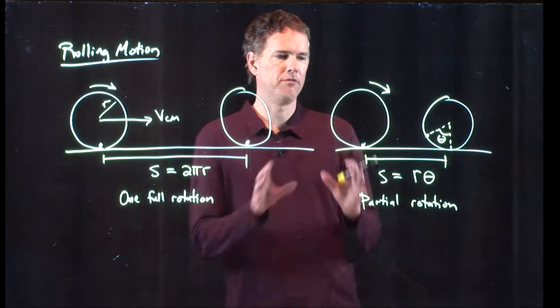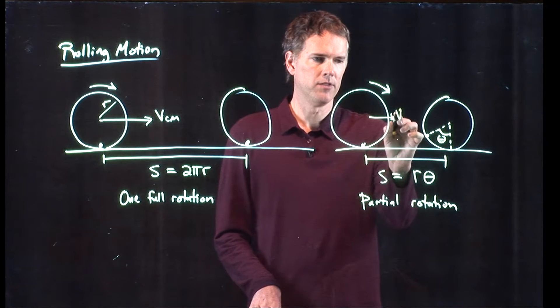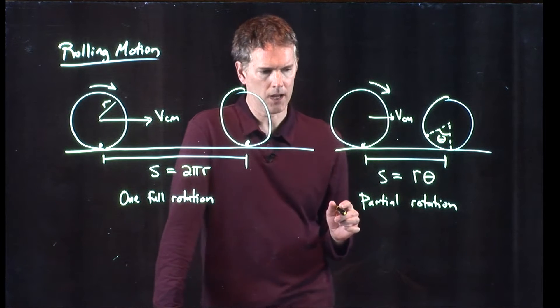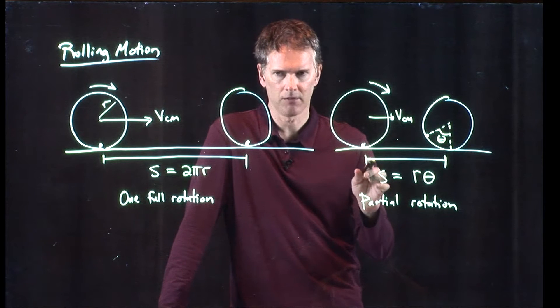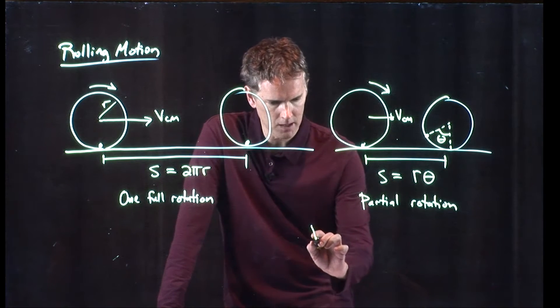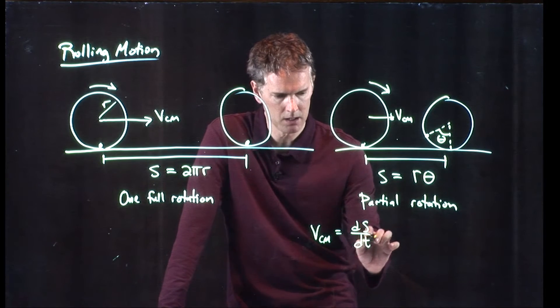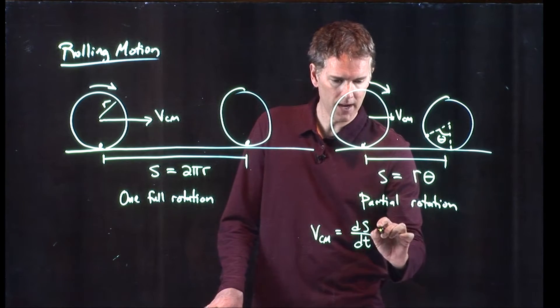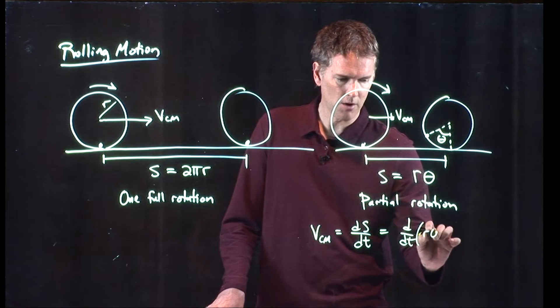Can we somehow figure out now what the velocity v_cm is for this case? Well yeah, I think so, because how I increase my distance as a function of time, that's my velocity. Velocity is just ds/dt. But we know what s is, it's right there, r theta. So this is d/dt of r theta.